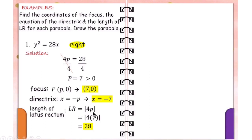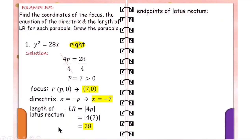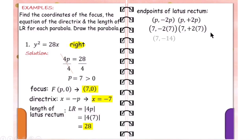In order to draw the graph, we first determine the endpoints of the latus rectum using the formula: (p, −2p) and (p, 2p) — p comes before 2p. Replace p with 7 and simplify: the first endpoint is (7, −14) and the second endpoint is (7, 14). These are the endpoints of the latus rectum.